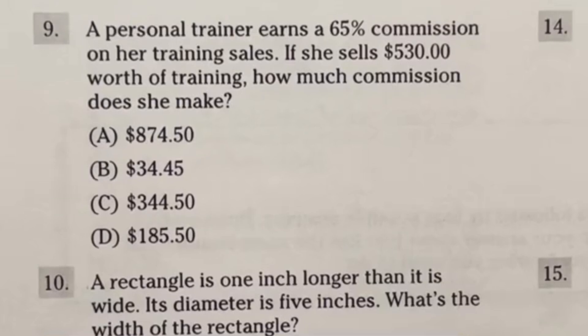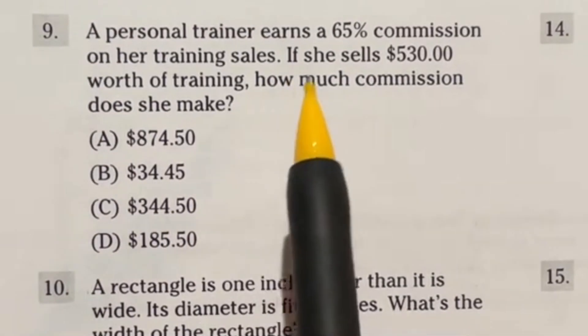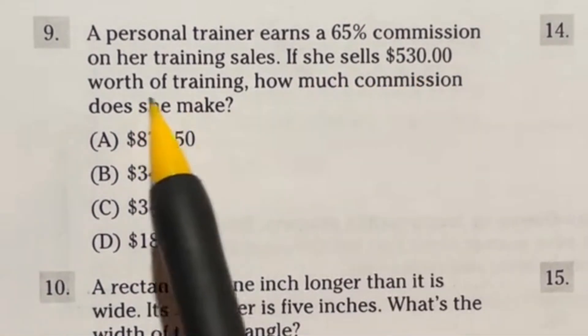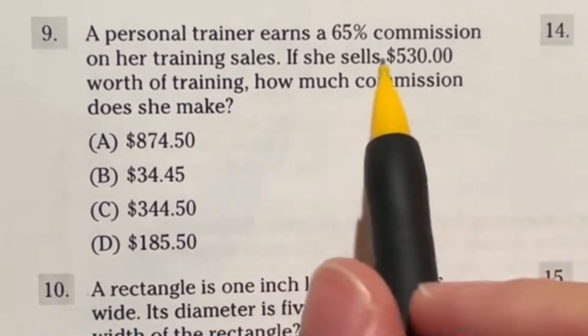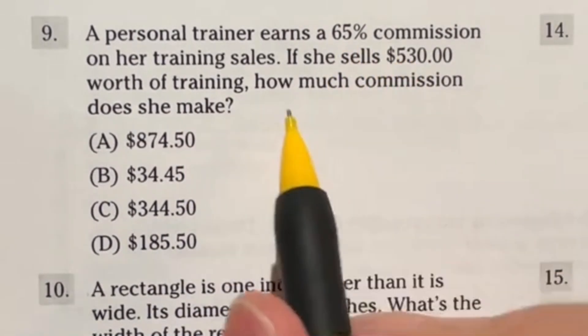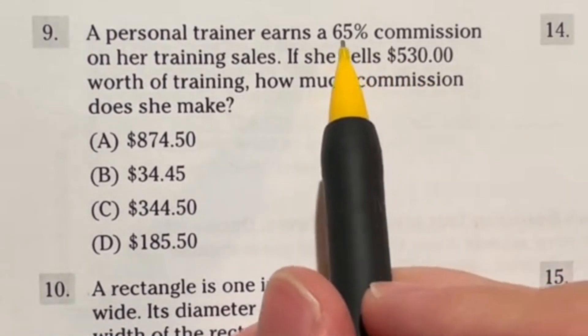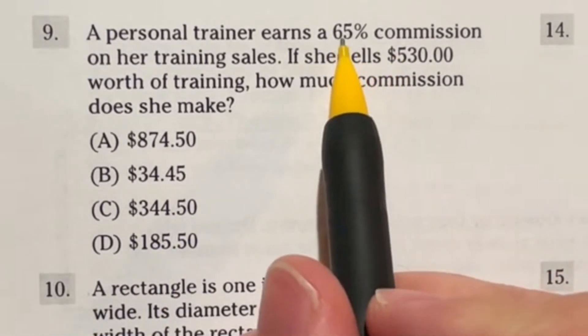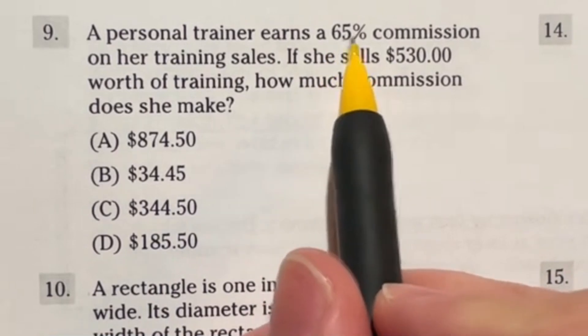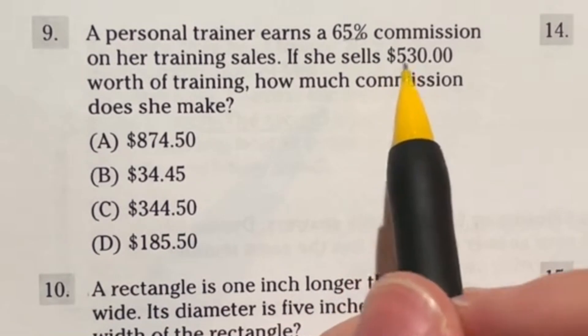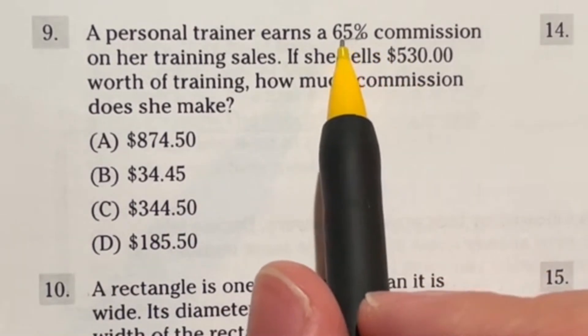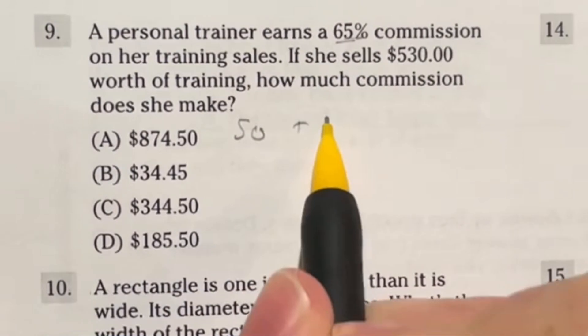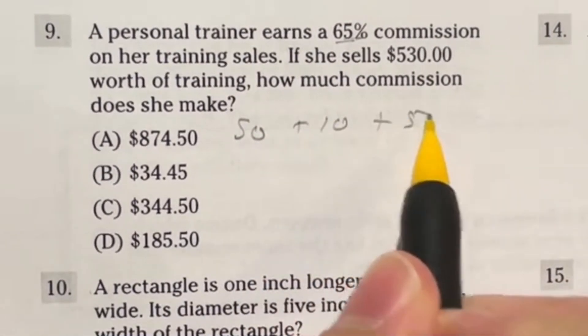Number nine says a personal trainer earns 65% commission on her training sales. If she sells $530 worth of training, how much commission does she make? The way you would do this long way is take 530 and multiply it by 0.65. Although that is one way, I'm going to do this using some shortcuts here with percents, just estimating.